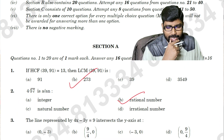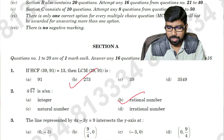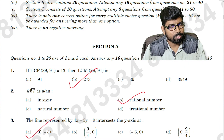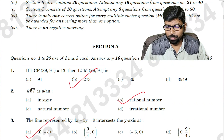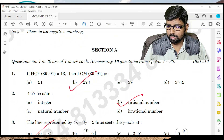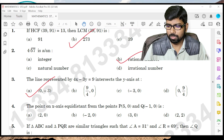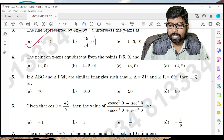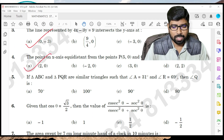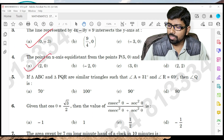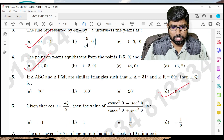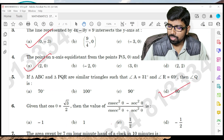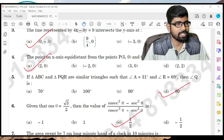Question number three: option A. Question number four: answer is A. Question number five: answer B. Question number six: answer C. Quickly check the answers.